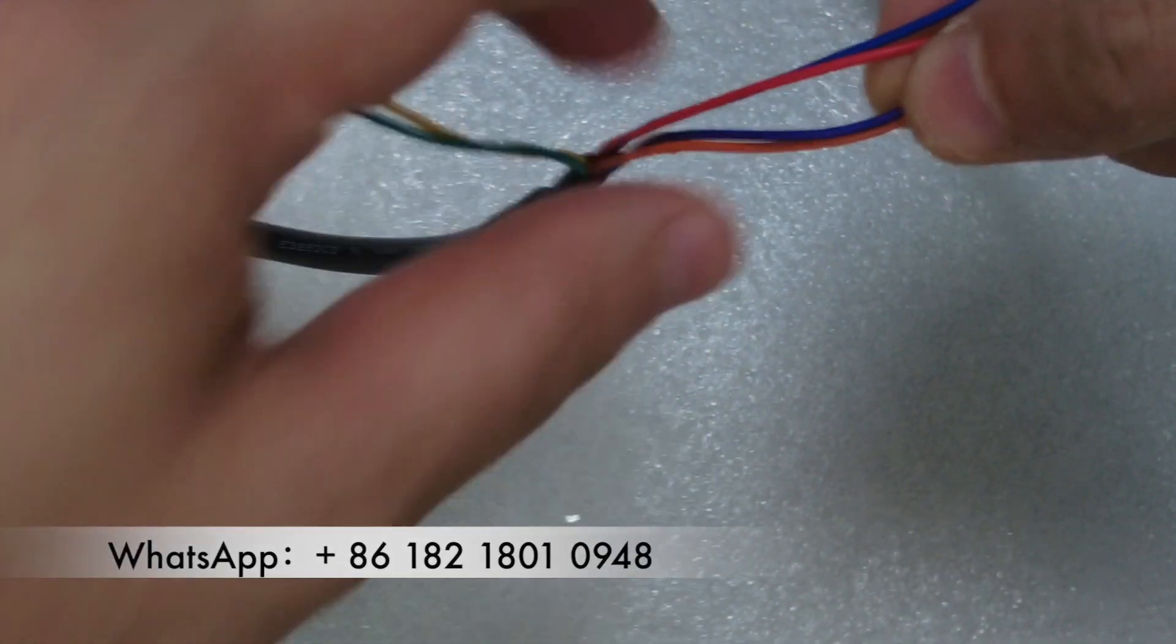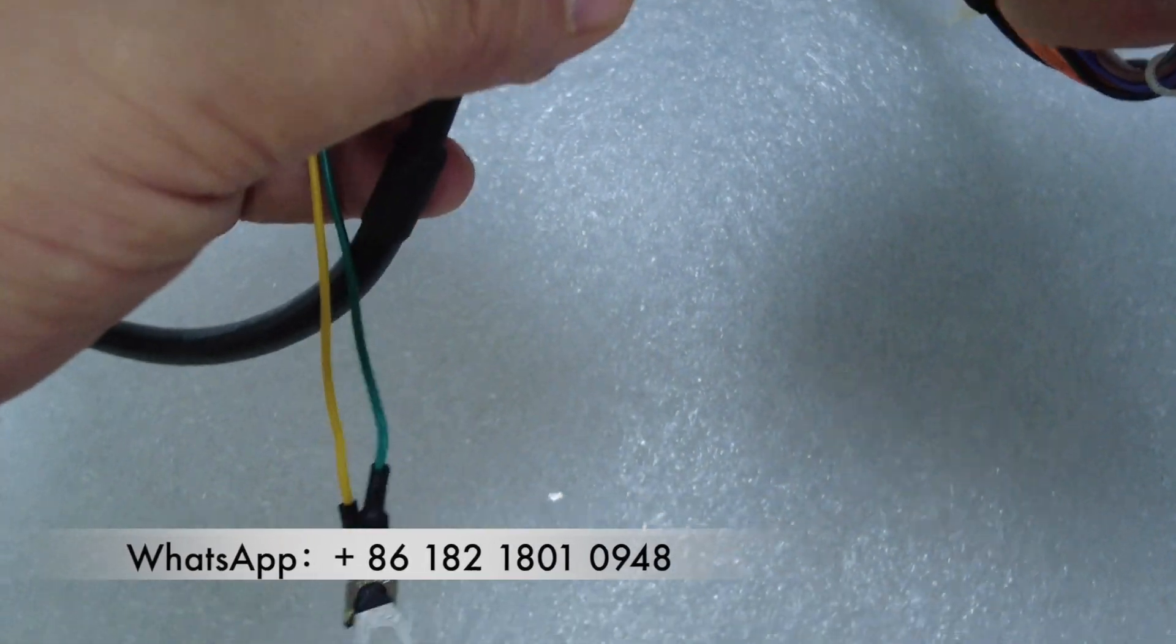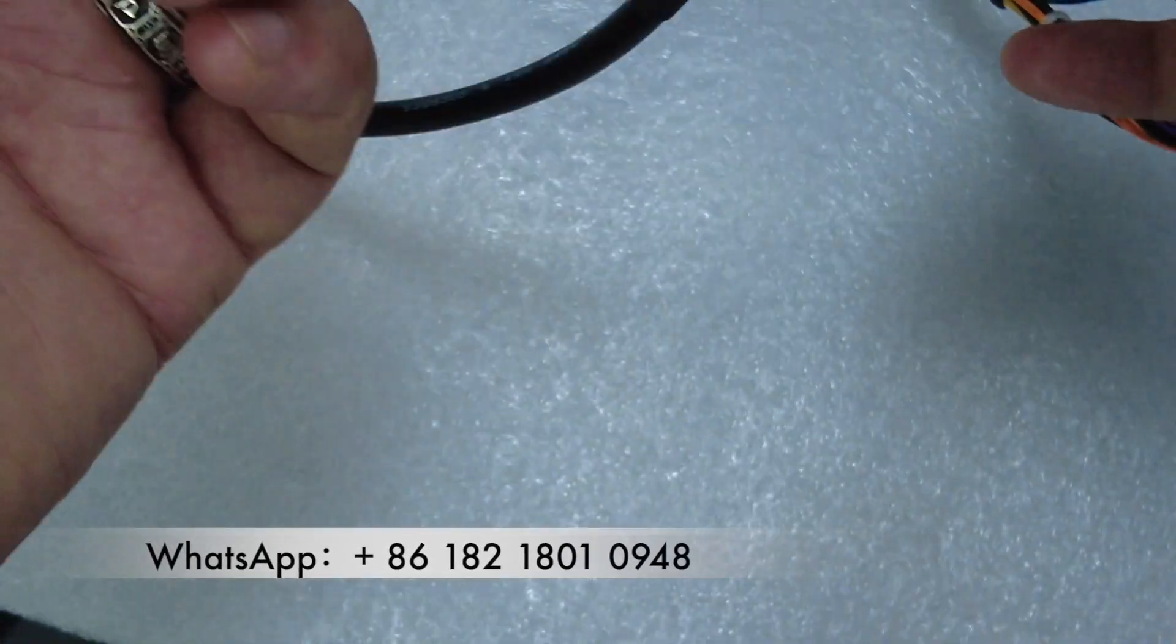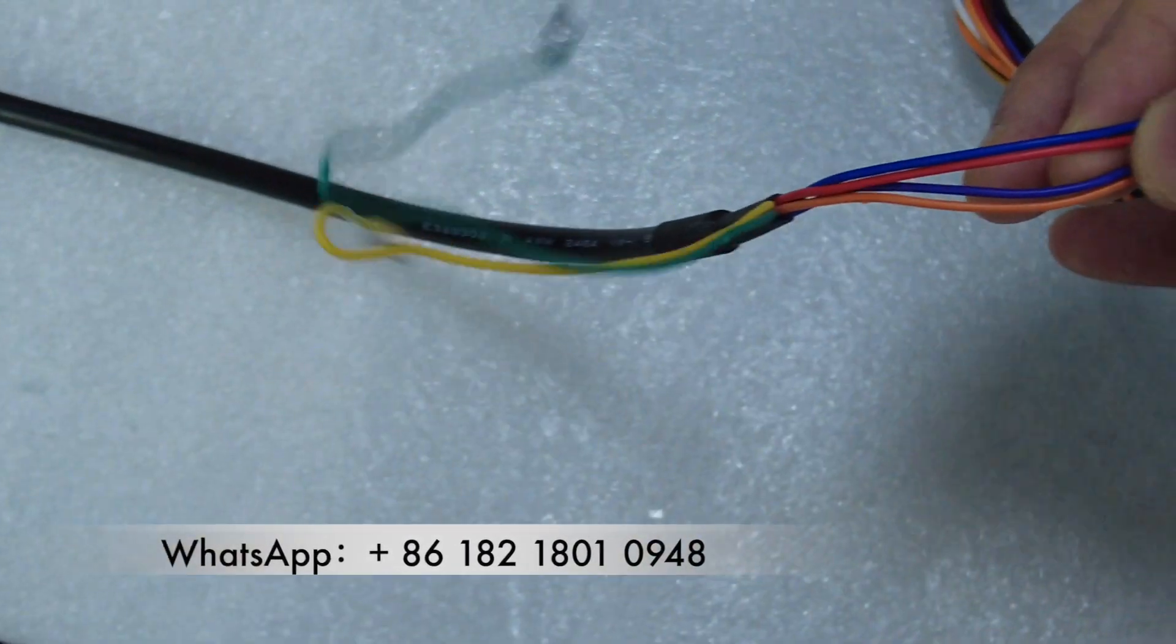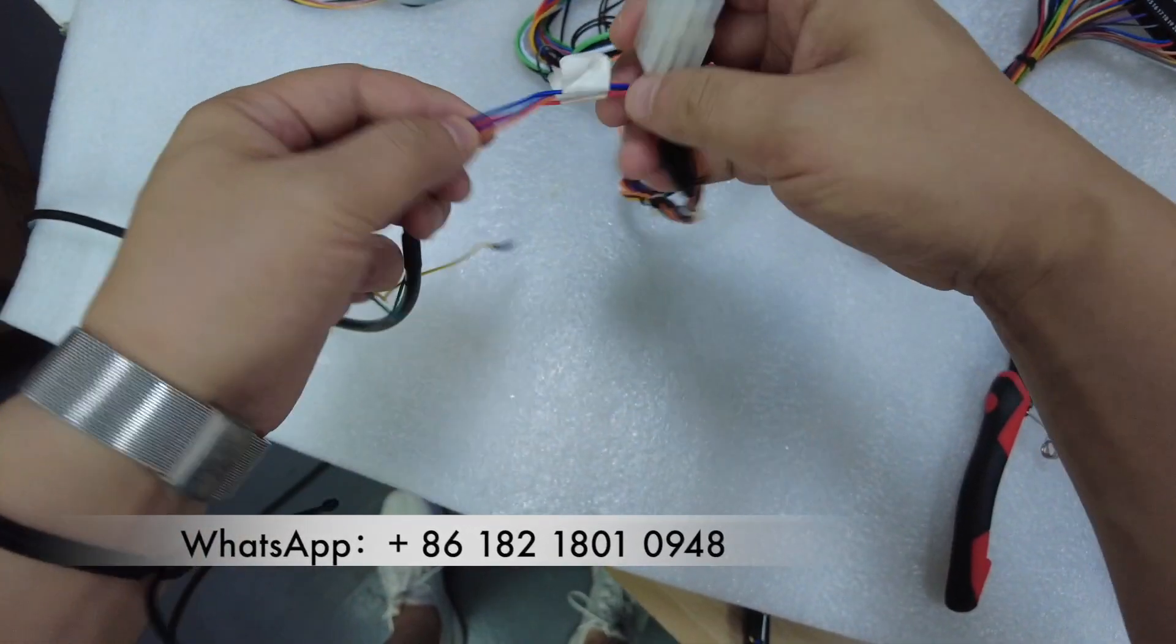There are six cables - the red, the blue, the orange, the purple - which are connected to the harness. And the yellow and the green will not be used. The yellow and green will be no use.